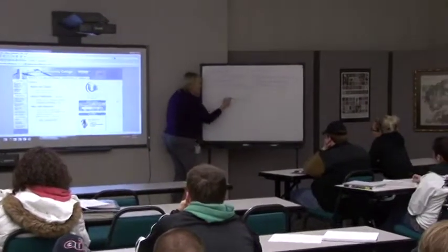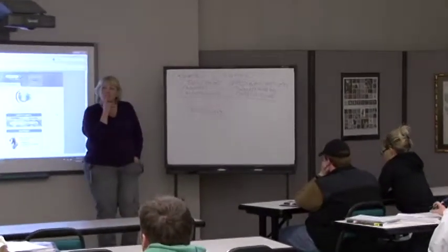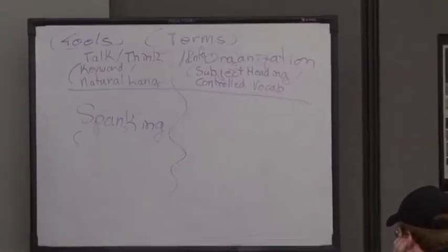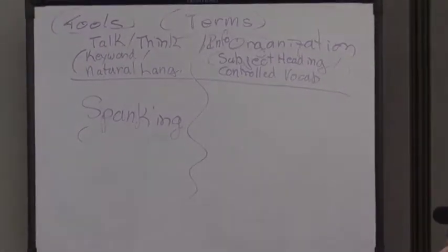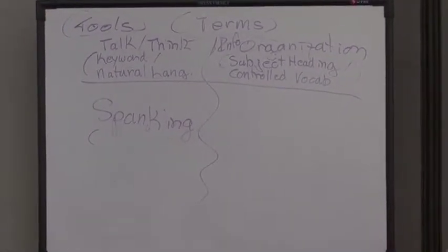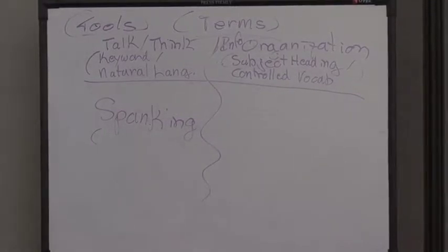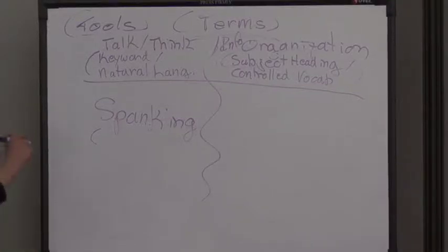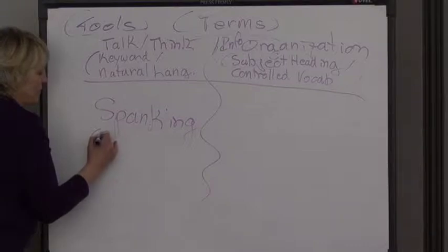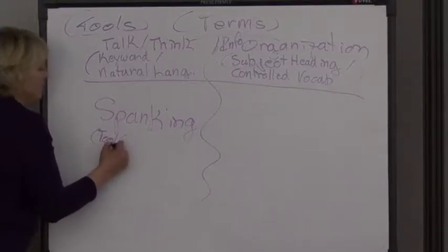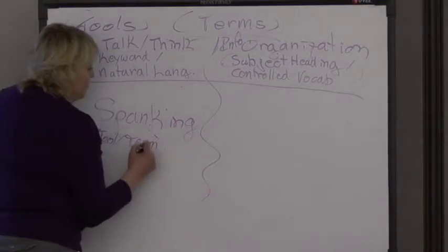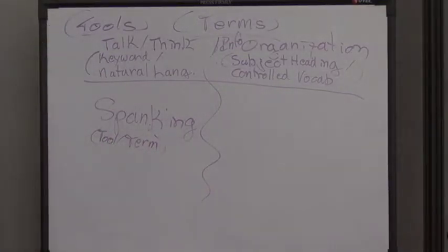You're going to Google 'spanking.' What do you think your search retrieval will be? A whole bunch of porn. So the question is: do you think you'll get credible information from that strategy — stuff you can use in an academic setting? No. The strategy mistake people make is they're choosing the wrong tool — Google — and they're choosing the wrong term: 'spanking.'